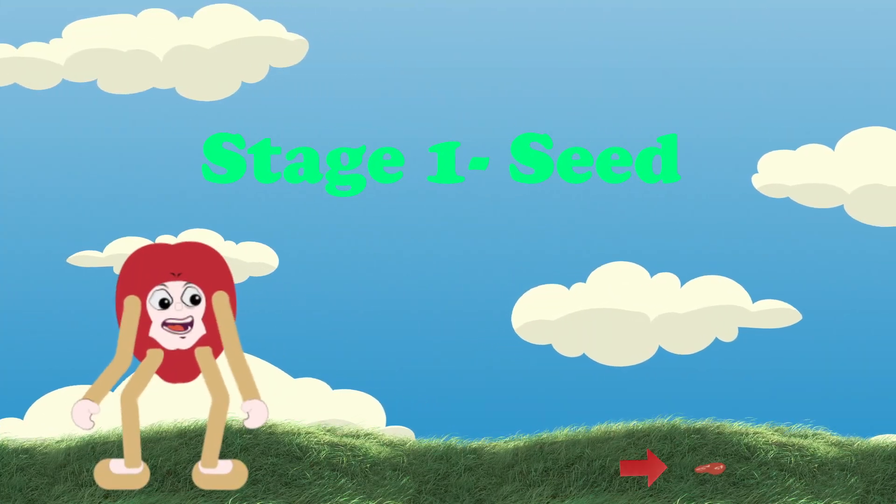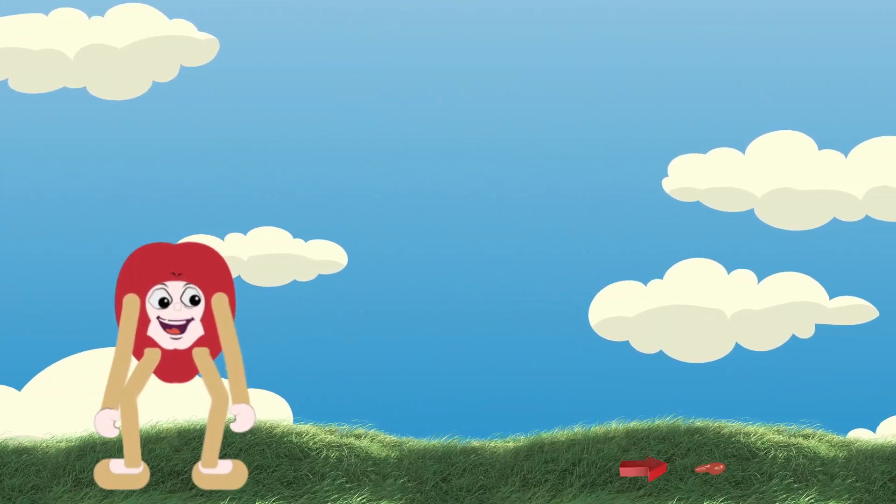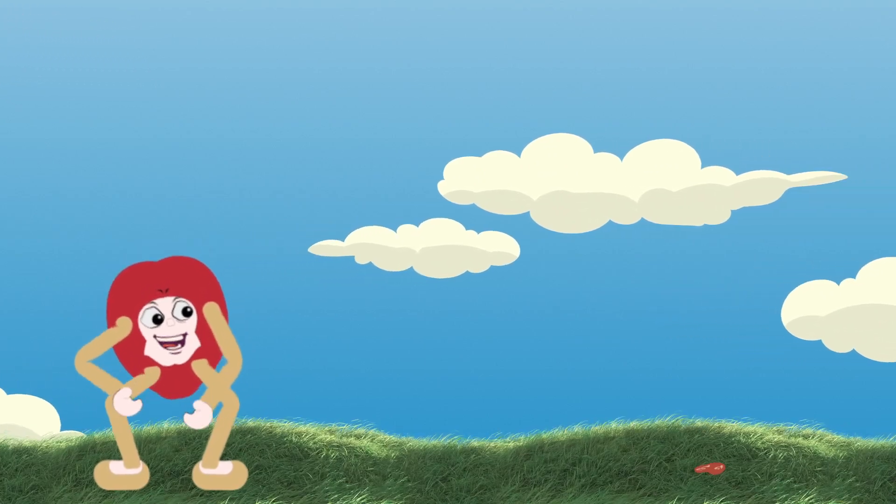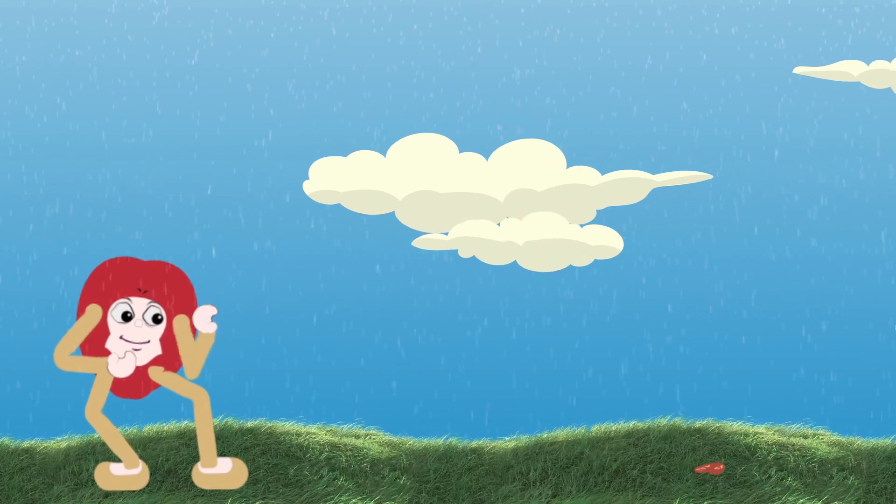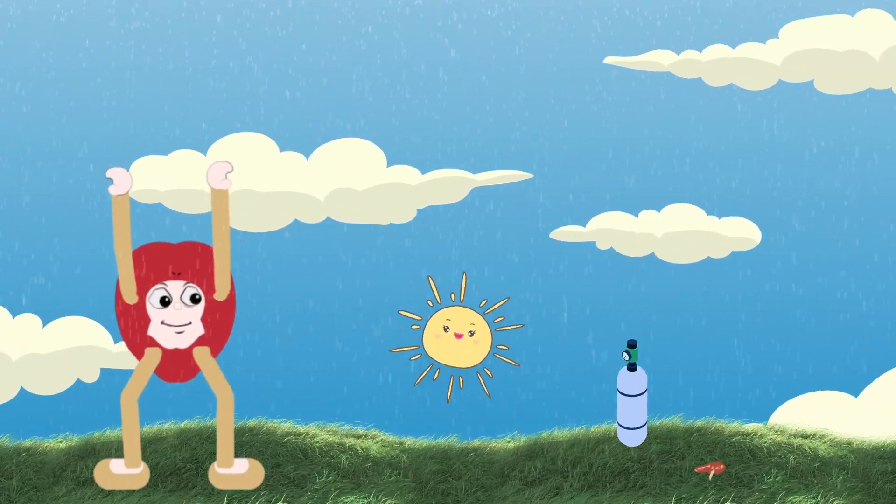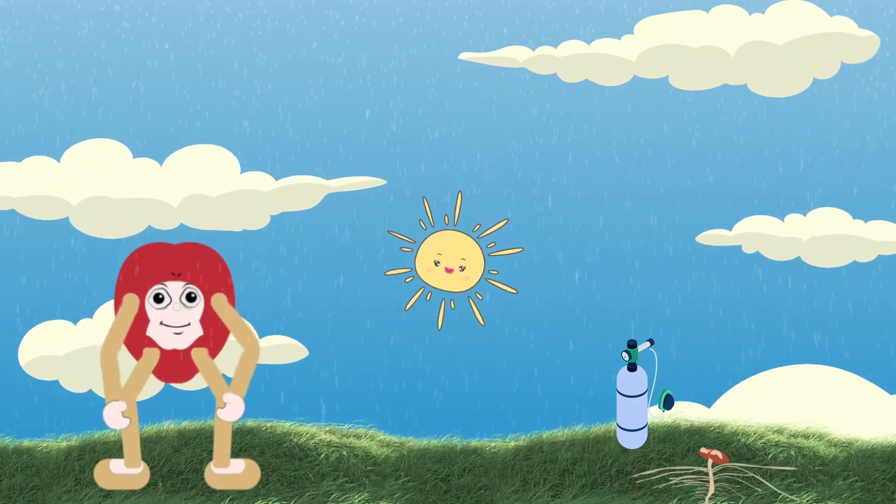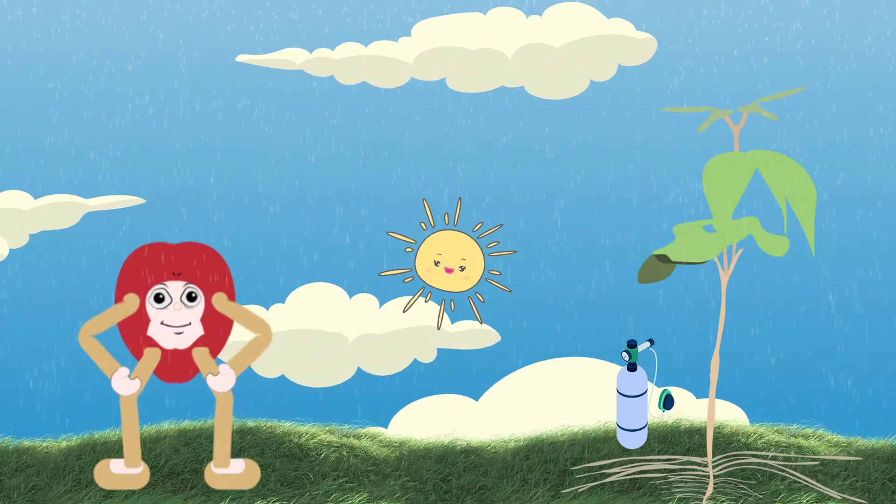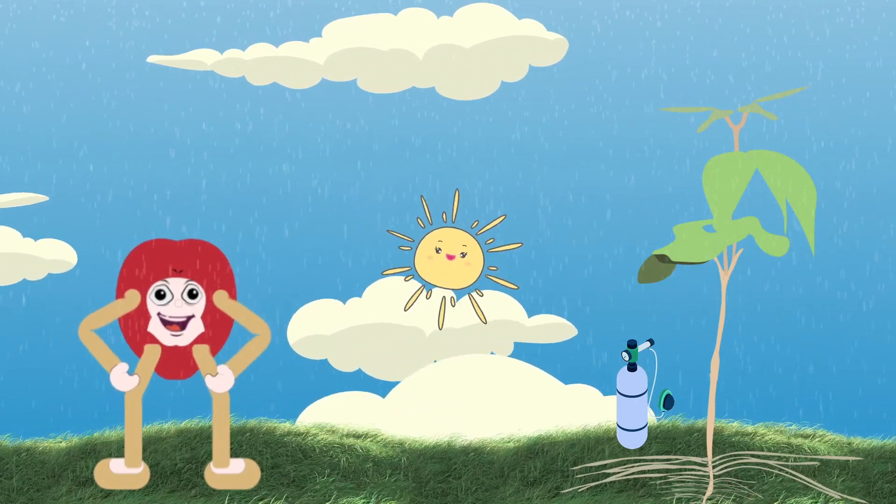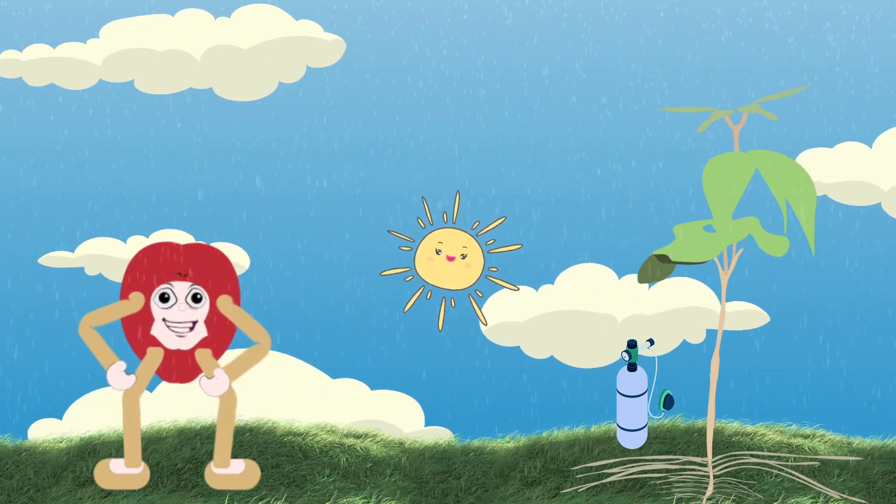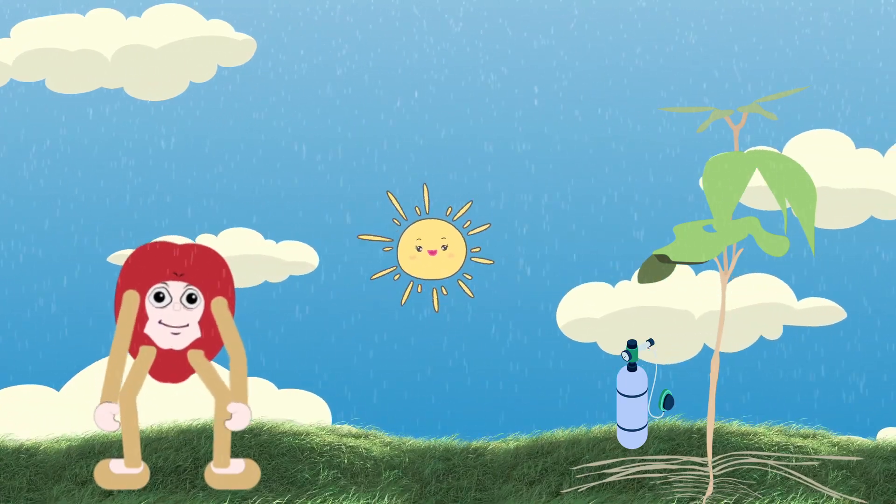Stage 1: The Seed Stage. The life cycle of a bean plant begins as a seed. When we plant the seed in soil, if the seed gets all the things it needs to grow - water, sunlight, and air - then a transformation will happen. Even though we can't see it under the soil, the seed will start to swell and grow roots, which anchor the plant and absorb water and nutrients from the soil.